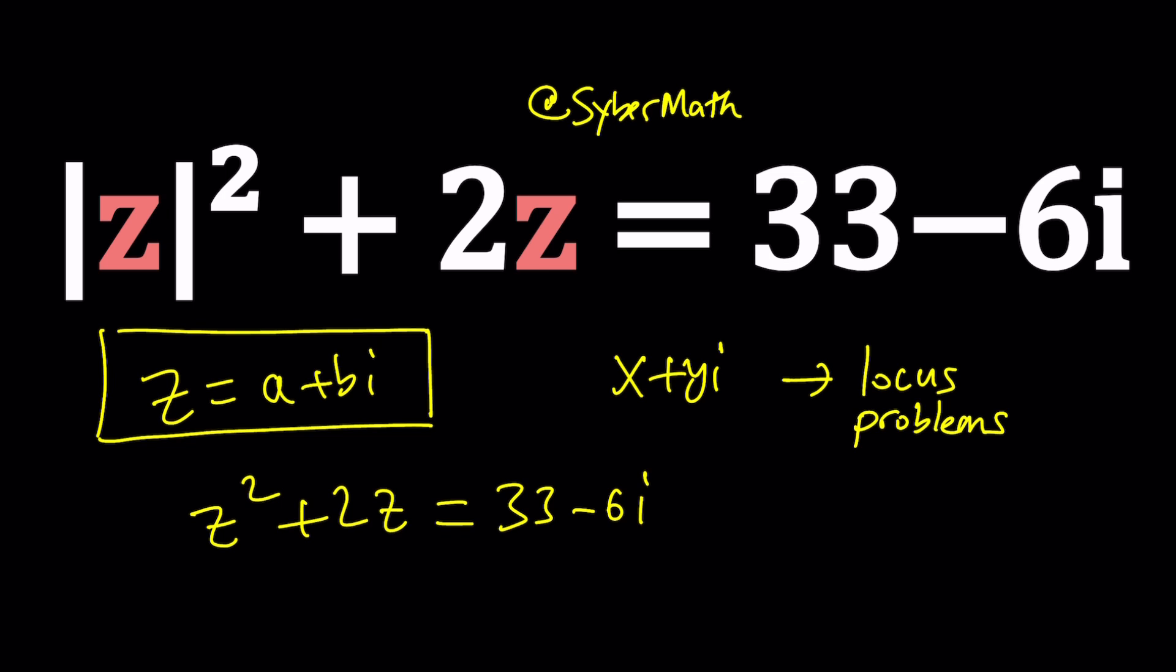But absolute value of z is different from z. Can they be the same? Sure, absolutely. But when z is not real that's not the case. So we can't do that.